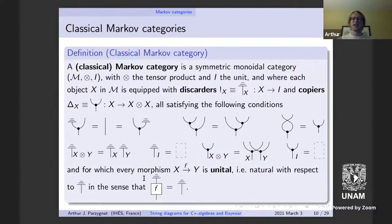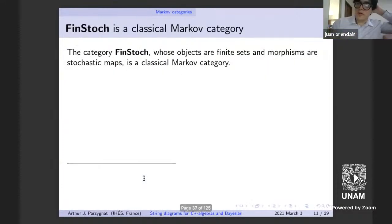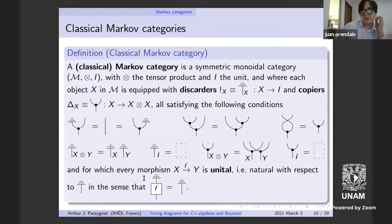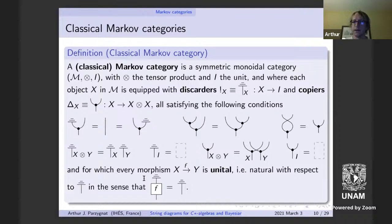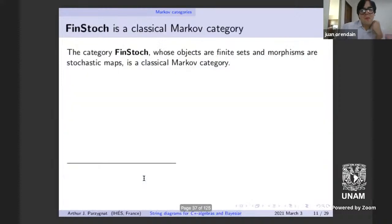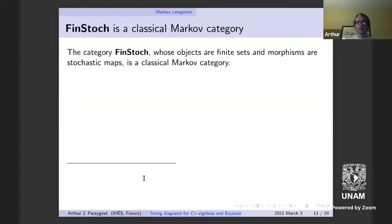The unitality condition is an information preservation condition. In the example of finite sets and stochastic maps, we could have chosen to associate measures rather than probability measures; the fact that it's a probability measure means this equation holds. There's a question from Roberto asking if this is the same as a co-commutative algebra object plus a state. Yes, it's very similar to that.